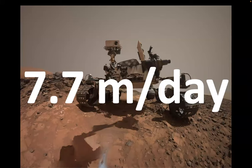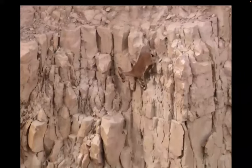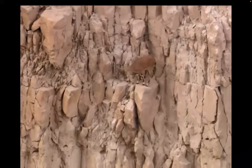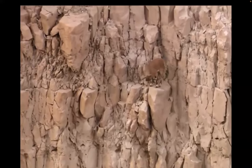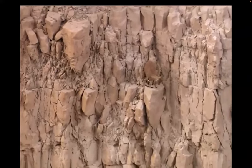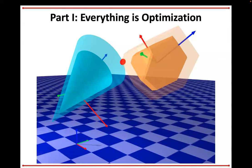I want to show the baby steps we've been taking in my lab towards this dream for the last five years or so. Part one of the talk: I'm going to try to convince you that everything is optimization — and by everything, I mean in the scope of contact dynamics, control, planning, et cetera. All the sub-problems there, all the little pieces, are optimization problems, or at least can be thought of and posed as optimization problems.